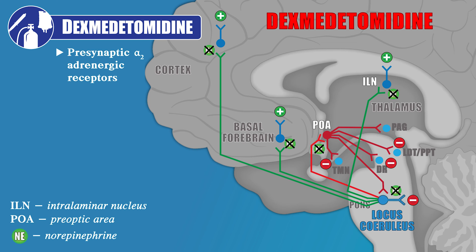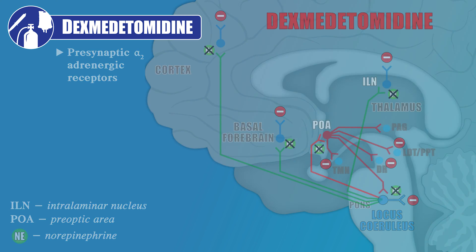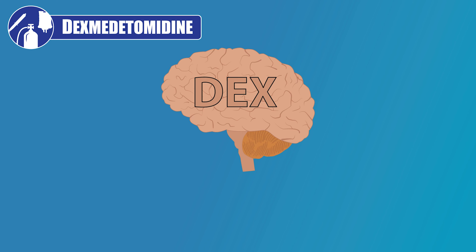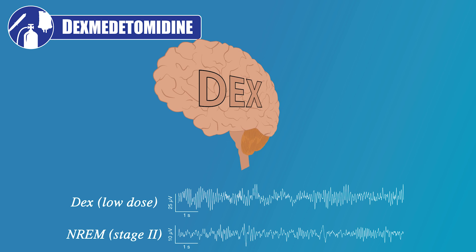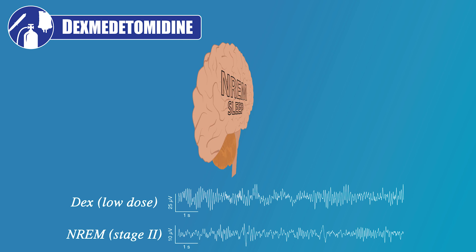The decrease of norepinephrine release also decreases thalamocortical connectivity due to the loss of excitatory inputs from the locus coeruleus to the cortex, basal forebrain, and intralaminar nucleus of the thalamus. The relationship between the mechanisms of dex sedation and non-REM sleep makes a lot of sense considering the similarities in their EEG patterns.